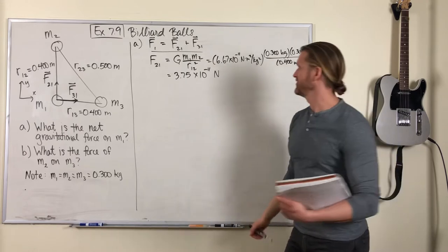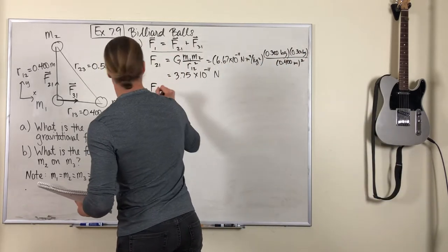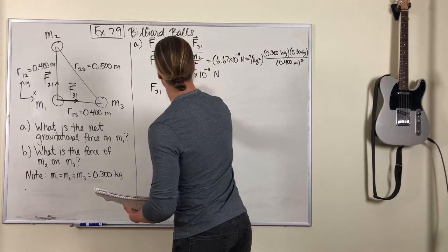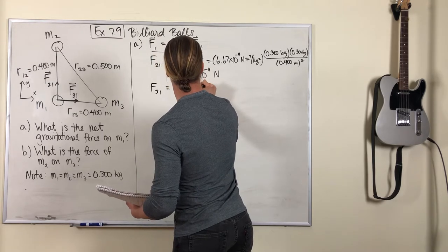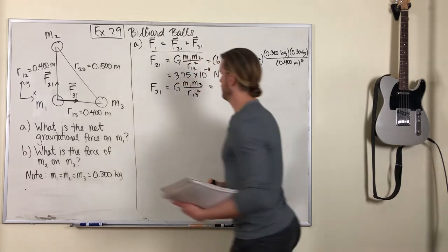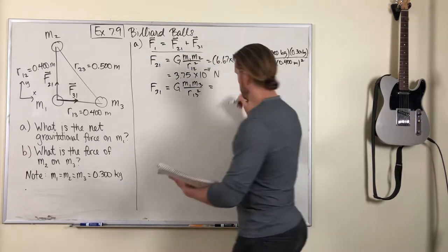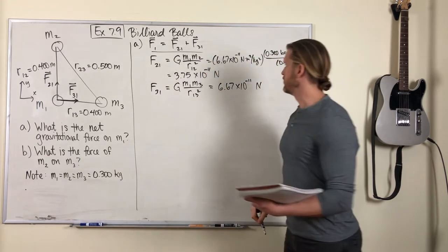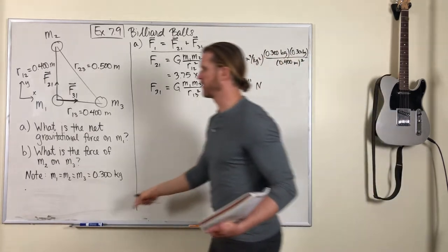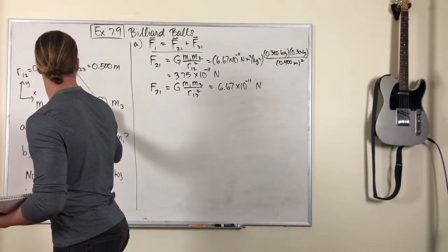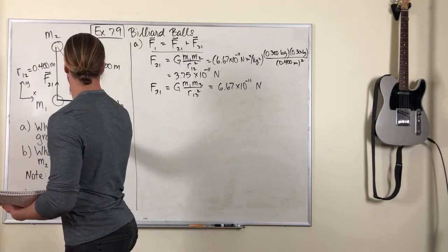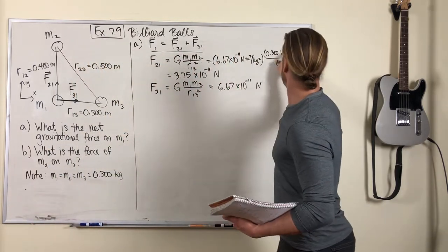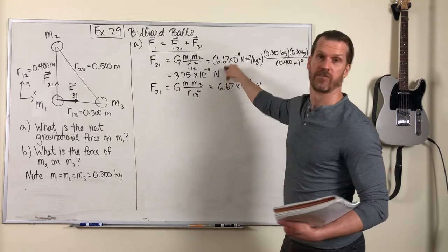Okay, let's keep going with the problem. F31. Same procedure, G M1 M3 over R13 squared. We've got all those numbers, plug them in. 6.67 times 10^-11. That should be 0.3 meters, which is why you have all these 0.3s to cancel and you just get left with this number 6.67.